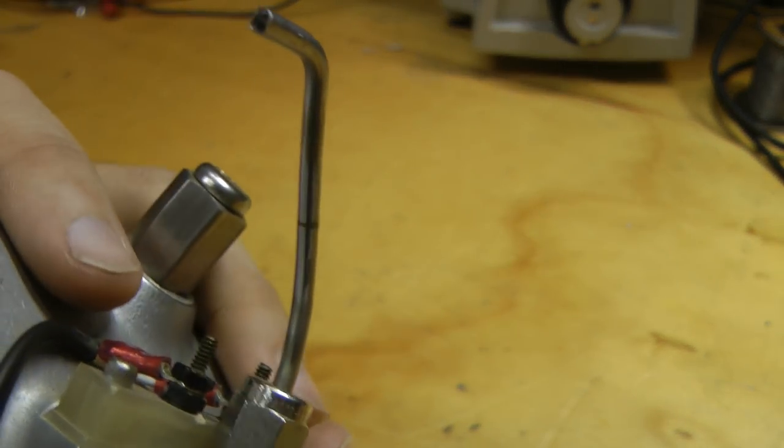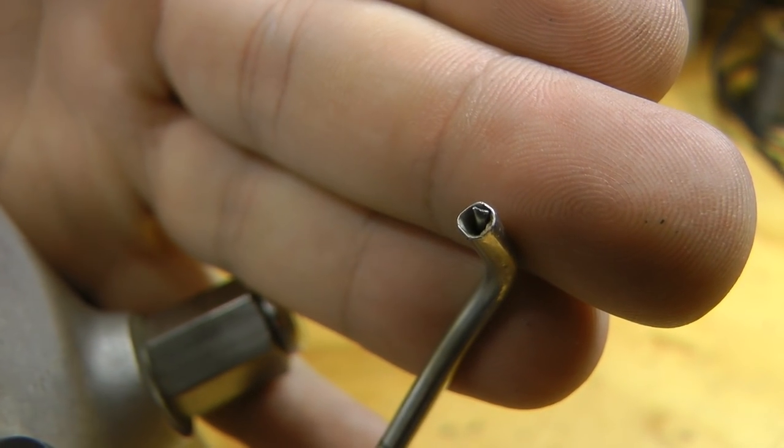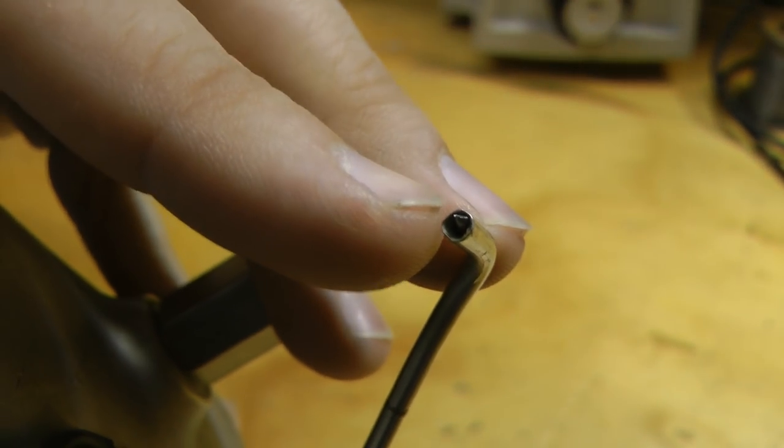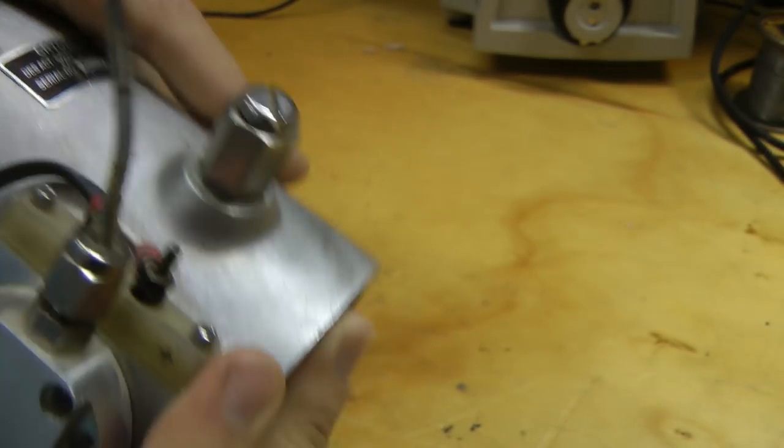Inside this tube, if you look really closely, if I get that to focus, it's actually a coaxial tube. There's two tubes in there, and it seems like the center one has gas flow when you turn it on.